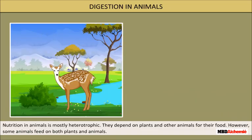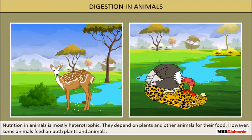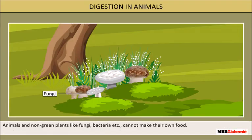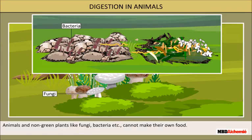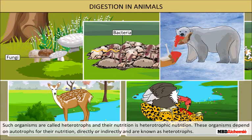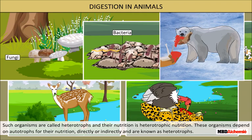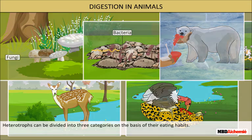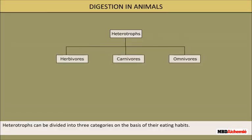Nutrition in animals is mostly heterotrophic; they depend on plants and other animals for their food. Some animals feed on both plants and animals. Animals and non-green plants like fungi and bacteria cannot make their own food. Such organisms are known as heterotrophs and their mode of nutrition as heterotrophic nutrition. These organisms depend on autotrophs for their nutrition directly or indirectly. Heterotrophs can be divided into three categories on the basis of their eating habits.